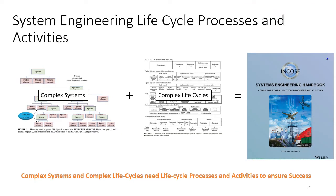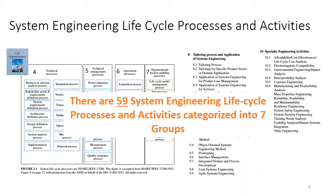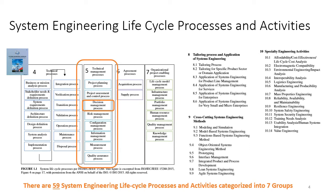We do system engineering because we have complex systems that are developed in complex life cycles. To help manage that process as effectively as possible, the INCOSI System Engineering Handbook has identified all of the processes and activities to achieve that goal — 59 system engineering lifecycle processes and activities organized into seven groups. The topic of this video is chapter 5, the Technical Management Processes, and very specifically the decision management process.